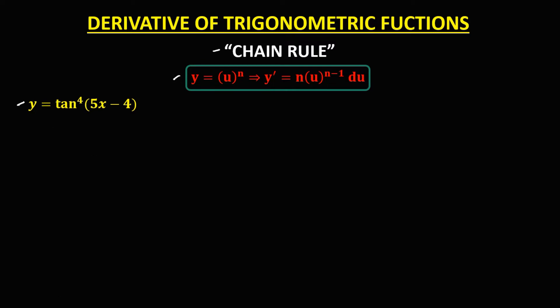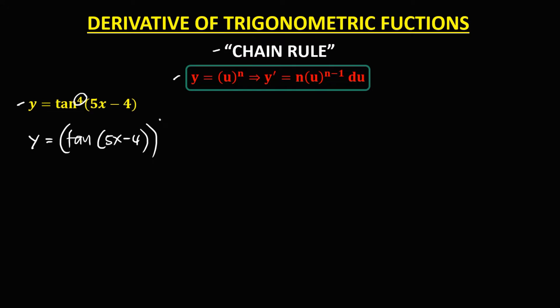For this given, y equals tangent to the power 4, then 5x minus 4. First, we need to rewrite this given. So this becomes y equals tangent of (5x minus 4), then to the power 4.